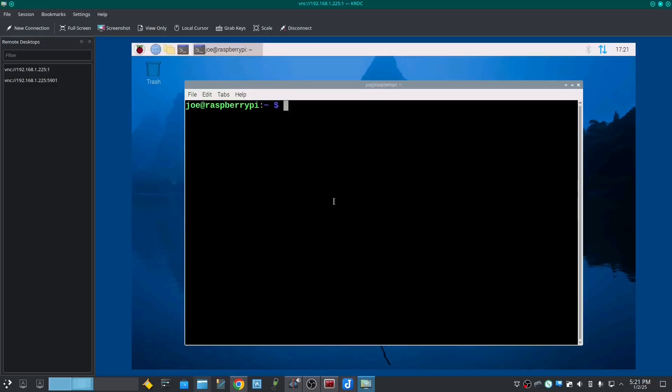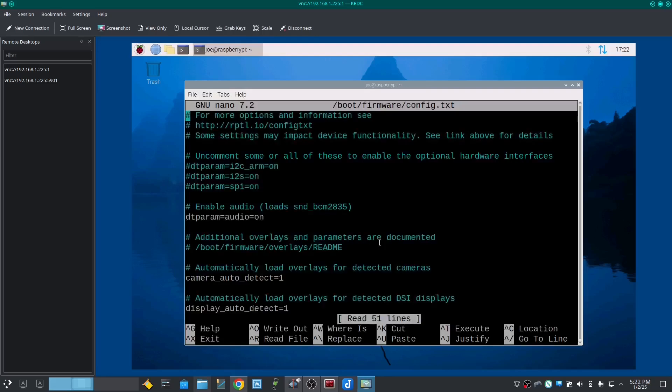Okay, to enable the PCIe on the Raspberry Pi 5, open a terminal and type sudo nano /boot/firmware/config.txt. And then somewhere in here, I'm just going to uncomment one of these lines and then change it to read DTPARAM=PCIEX1. I'm going to hit Ctrl-O, Enter, Ctrl-X.